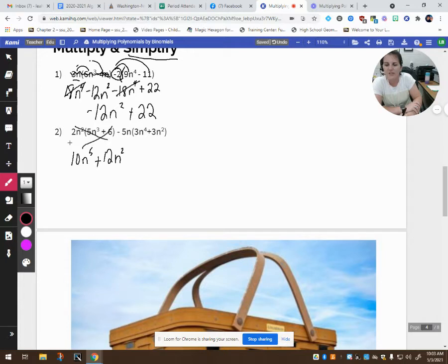Moving on. Negative 5n times 3n to the fourth gives me negative 15n to the fifth, right? Negative 5 times 3 is negative 15, n times n to the fourth is n to the fifth. Minus 15n to the third. So looking for like terms, I see that this and this are alike. So we can combine the coefficients. 10 take away 15 is negative 5n to the fifth.